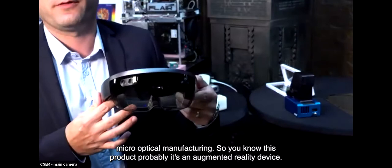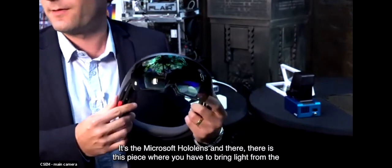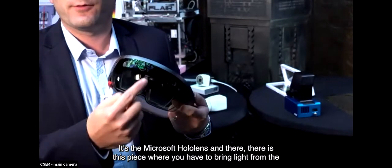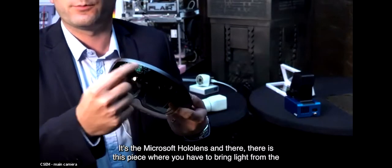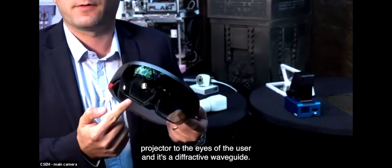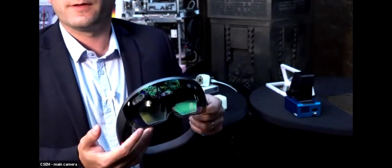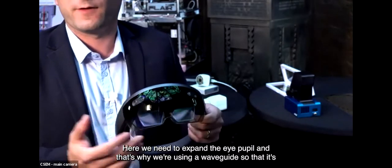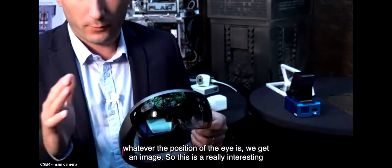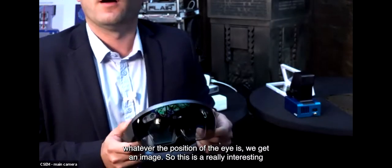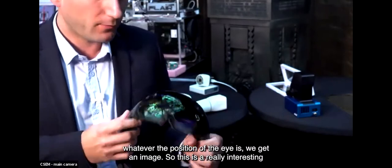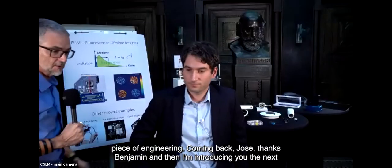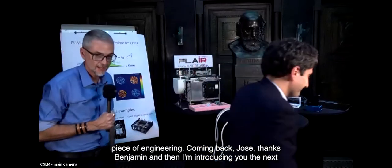You know this product probably - it's an augmented reality device, the Microsoft HoloLens. There's this piece where you have to bring light from the projector to the eyes of the user. It's a diffractive waveguide. Here we need to expand the eye pupil, which is why we're using a waveguide so that whatever the position of the eye is, we get an image. This is a really interesting piece of engineering.